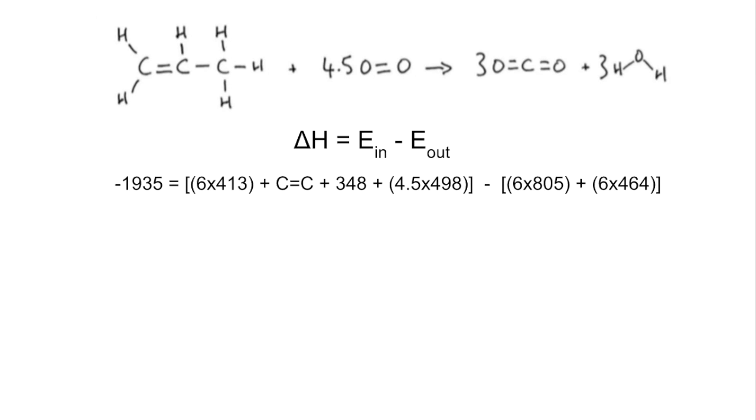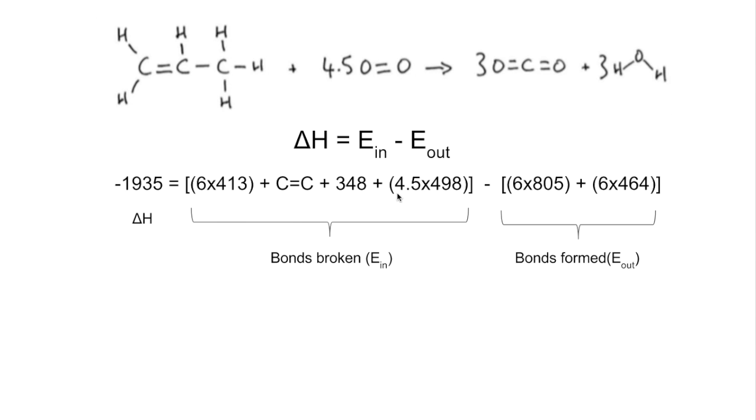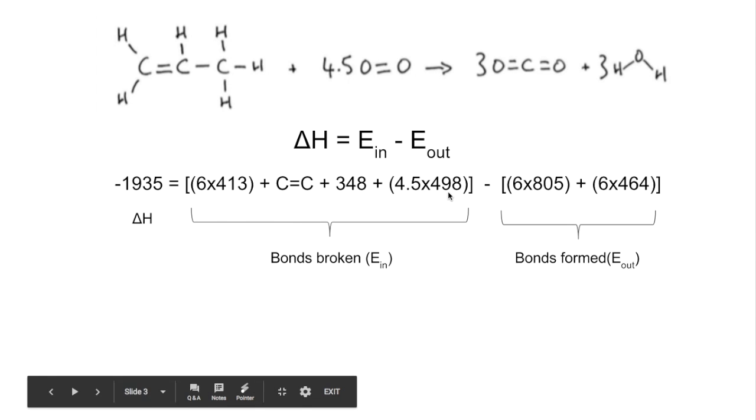So there's all the numbers. I'll just explain where they're coming from. We've got the enthalpy change was minus 1935. All of this slot here, these are all bonds that need to be broken. So that's my energy that has to go in. We've got six carbon hydrogen single bonds, the unknown C=C double bond, the C-C single bond, and four and a half moles of oxygen need to be reacted as well. So that's four and a half times the 498.